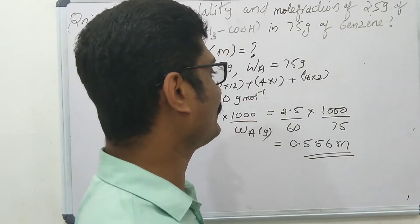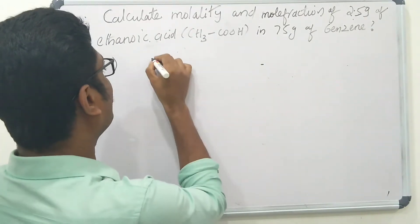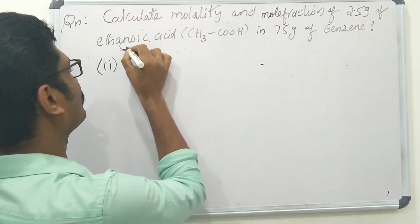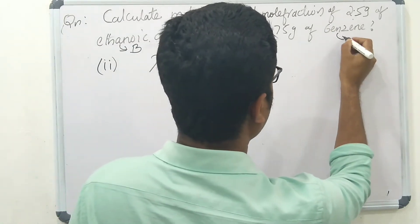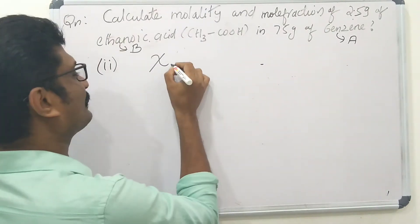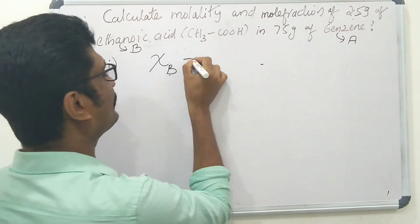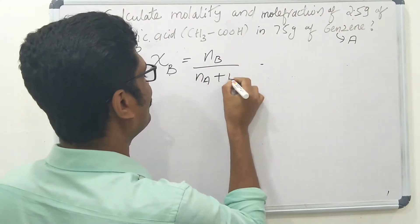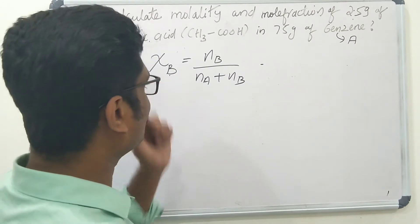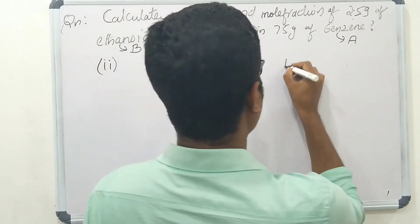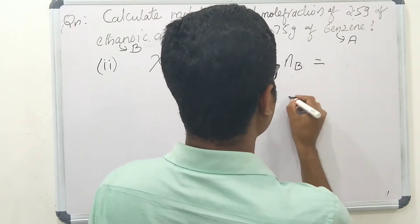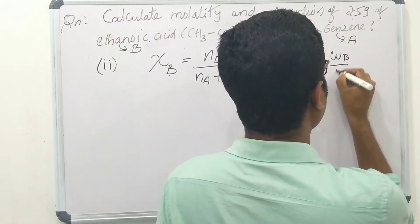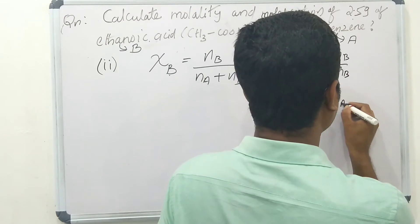The answer for molality is 0.556 mol per kg. Now for mole fraction of ethanoic acid: if ethanoic acid is solute B and benzene solvent is A, the mole fraction of B equals NB divided by (NA + NB). Number of moles of ethanoic acid is WB/MB, and number of moles of benzene is WA/MA.